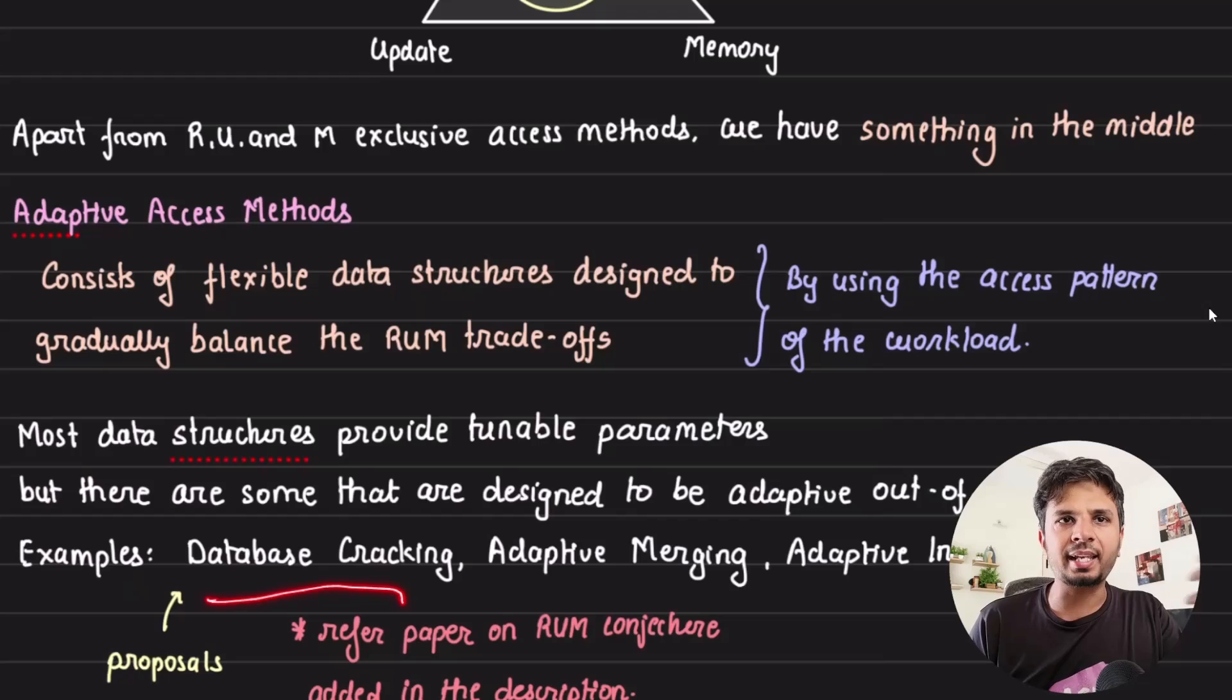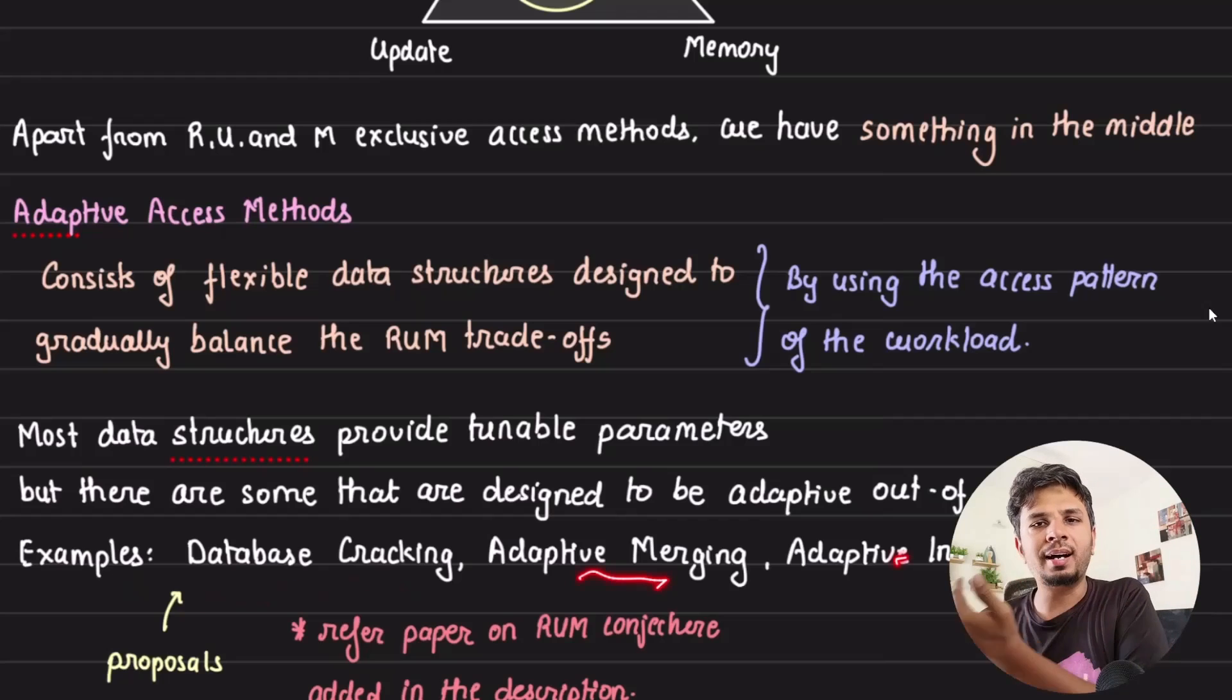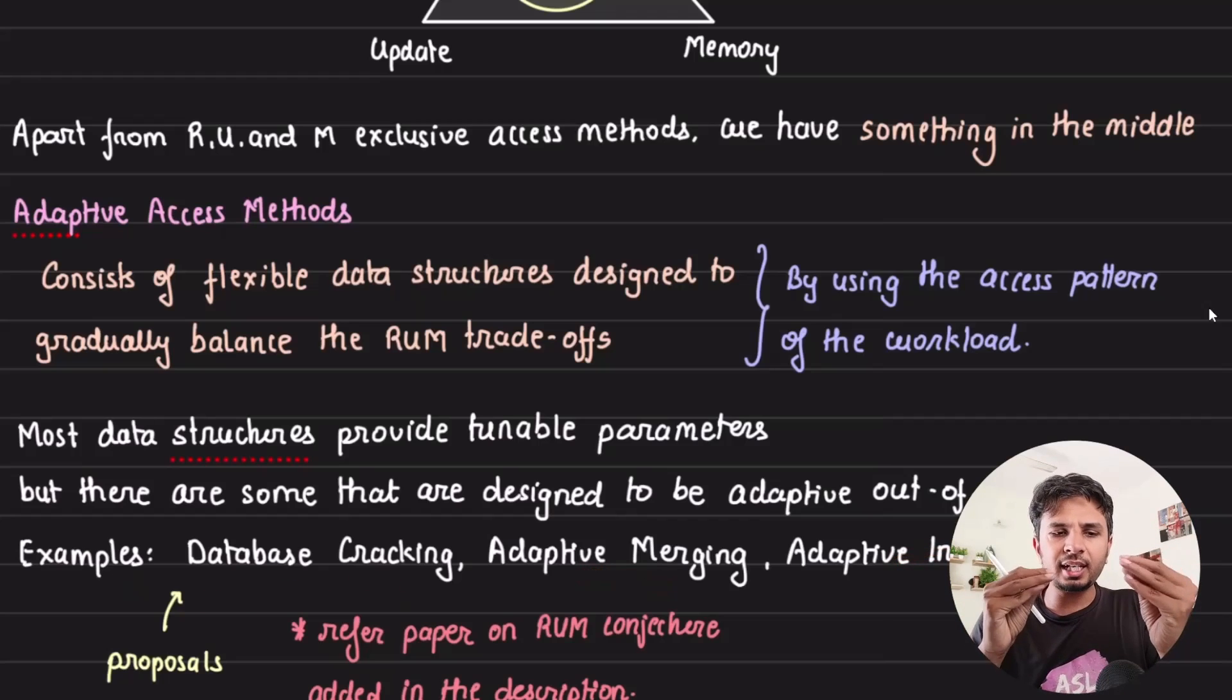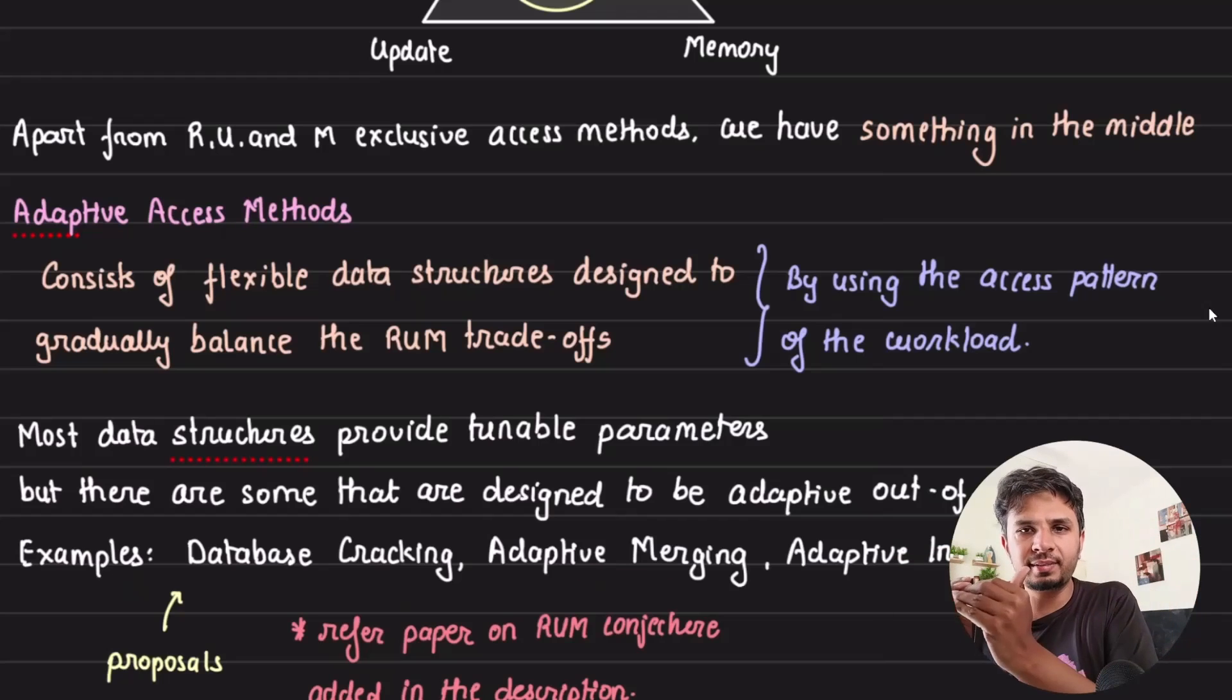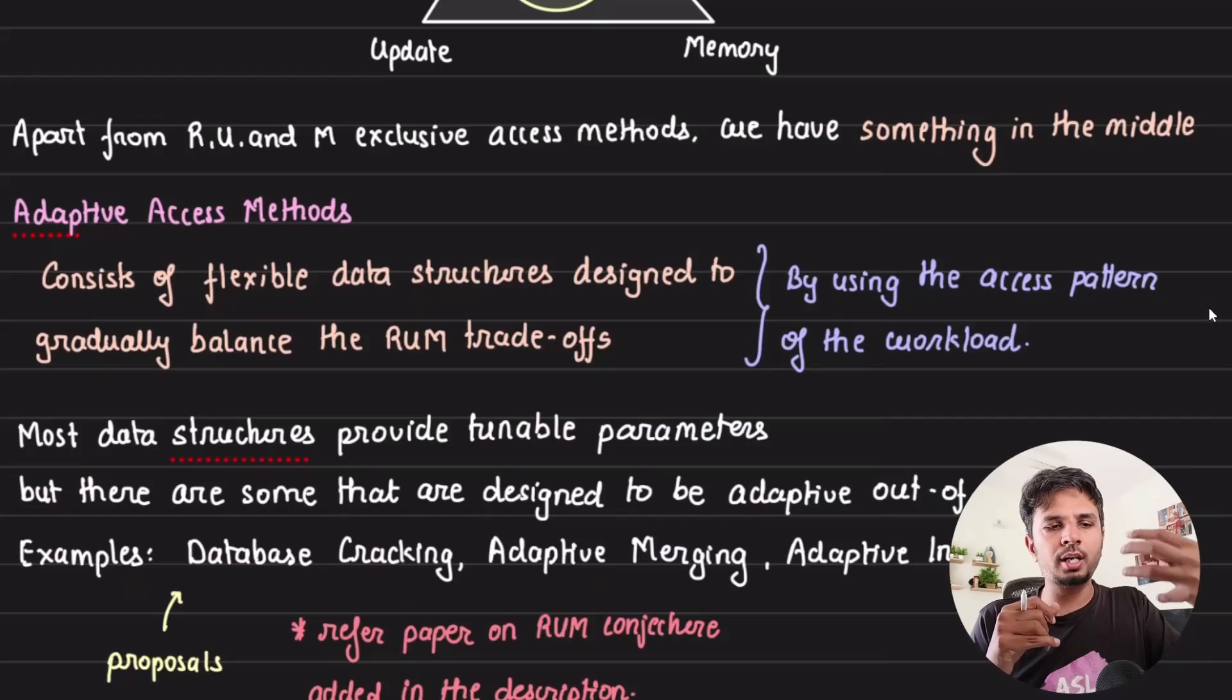Examples include database cracking, adaptive merging, and adaptive indexing. In most cases, these are tunable parameters you can use to tune existing systems to do different things under different loads. But there are some inherent data structures that adapt on their own. The tunability is what makes it possible for a database or data structure to adapt to any kind of workload. This entire thing is a RUM conjecture. It's not proven but observed, that's why it's called a conjecture.